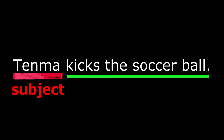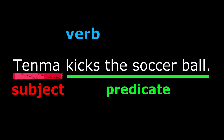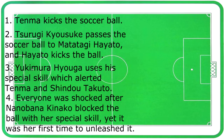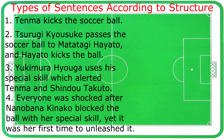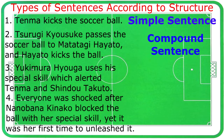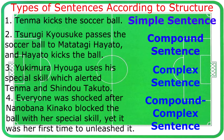So again, in the sentence 'Tenma kicks the soccer ball,' Tenma is the subject in our sentence — Tenma is the topic — while the remaining parts of the sentence is what we call the predicate, since it states something about our subject and it contains a verb. The verb in our sentence is the word kicks. Now, listing down all the sentences we've read earlier, there are four types of sentences according to structure: simple sentence, compound sentence, complex sentence, and compound complex sentence.